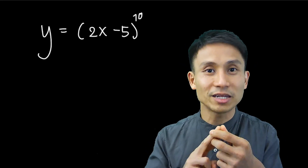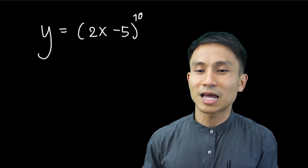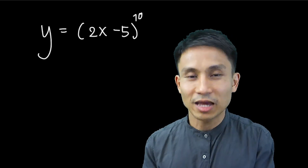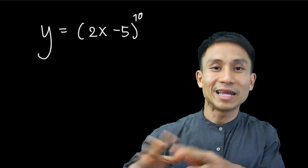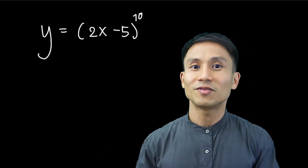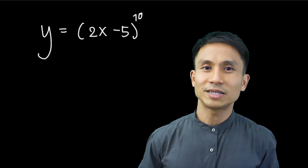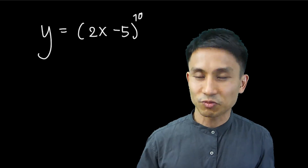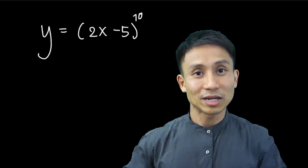To make the chain rule intuitive and simple, you need two key skills. First, you need to know which operation must come first and which must come last. In (2x-5)^10, you do inside the parentheses first — that's 2x-5 — and the last operation is raising it to the power of 10. The other key skill is to be able to look at a complicated expression as a single variable or single term.